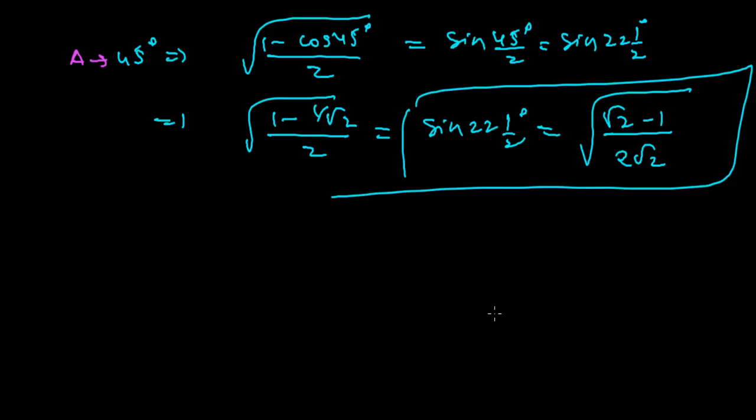Here you need to understand that sine 22.5 degrees is always positive because in the first quadrant, all trigonometric ratios are positive. So the value of sine 22.5 degrees is positive.